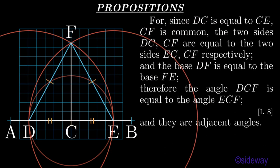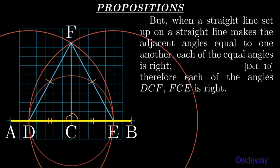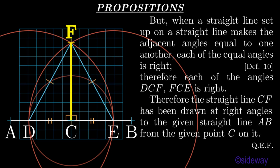I say that the straight line FC has been drawn at right angles to the given straight line AB from C, the given point on it. For since DC is equal to CE and CF is common, the two sides DC, CF are equal to the two sides EC, CF respectively. And the base DF is equal to the base FE. Therefore the angle DCF is equal to the angle ECF, by Book 1 Proposition 8. And they are adjacent angles. But when a straight line set up on a straight line makes the adjacent angles equal to one another, each of the equal angles is right, by Book 1 Definition 10. Therefore each of the angles DCF, FCE is right. Therefore the straight line CF has been drawn at right angles to the given straight line AB from the given point C on it. That which was to be done.